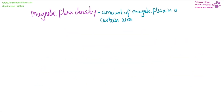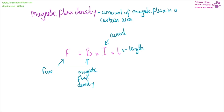Magnetic flux density is the amount of magnetic flux in a certain area. The equation is force equals magnetic flux density times current times length. Note that this uses an uppercase I and a lowercase l. Units: force in newtons, magnetic flux density in tesla, current in amps, and length in meters.